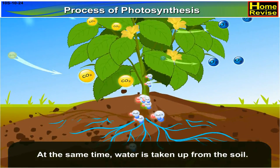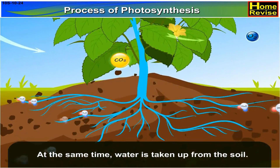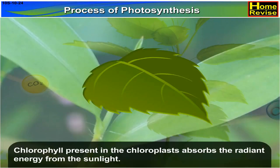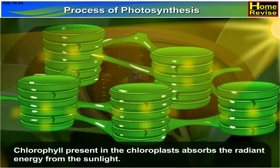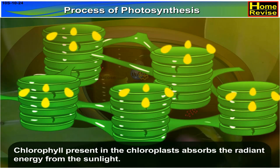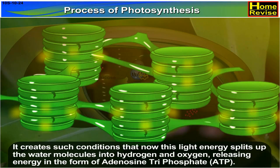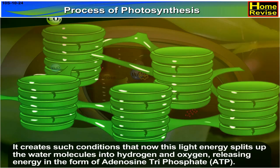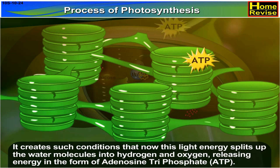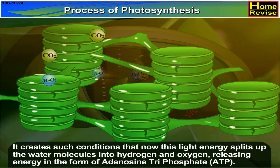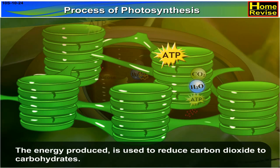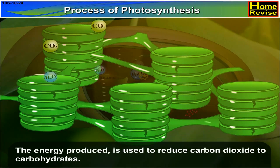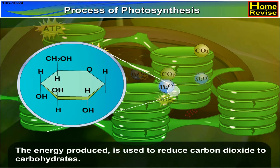At the same time, water is taken up from the soil. Chlorophyll present in the chloroplasts absorbs the radiant energy from the sunlight. It creates such conditions that this light energy splits up the water molecules into hydrogen and oxygen, releasing energy in the form of adenosine triphosphate or ATP. The energy produced is used to reduce carbon dioxide to carbohydrates.